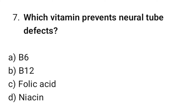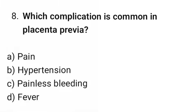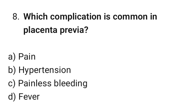Question number 7: Which vitamin prevents neural tube defects? The correct option is C: Folic acid.